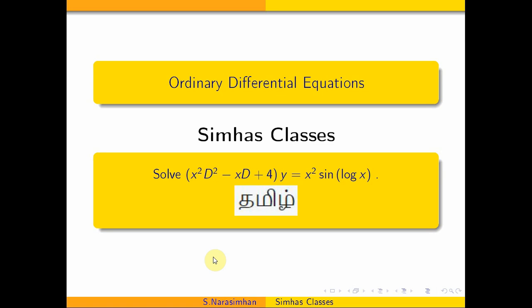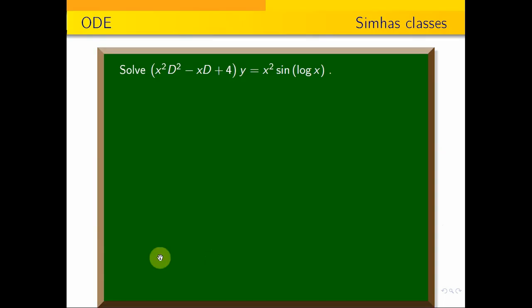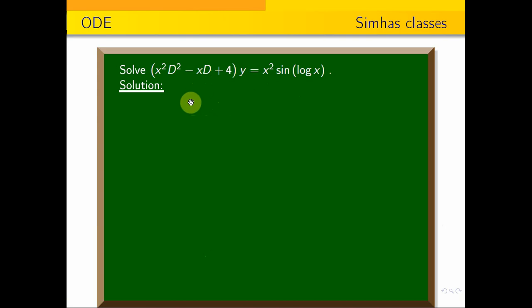Hi students, welcome to CMOS classes. We are studying ordinary differential equations with variable coefficients. The problem is: solve (x²D² - xD + 4)y = x²·sin(log x).